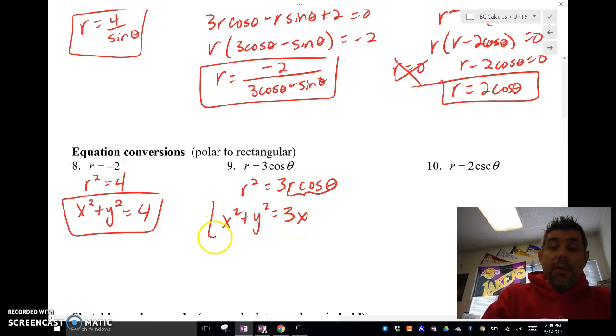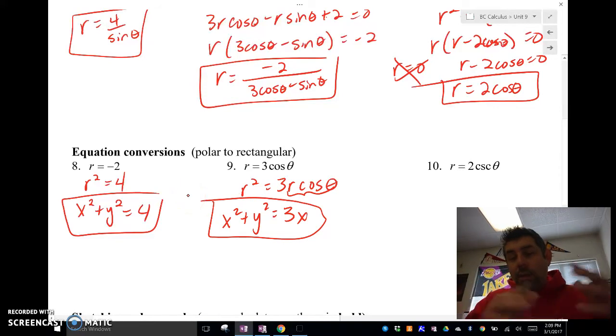So here's our equation. Now I can do some more simplifying for that. I can move the 3x over and do all kinds of stuff, but that's good enough. We don't need to simplify for that one.